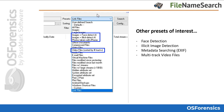OS Forensics version 8 introduced the new face detection and illicit image detection AI scans. The face detection scan will search the specified drive or location for all images that likely contain faces. The illicit image detection will scan a drive or directory for images that may contain nudity or other related types of explicit material. The 'Photos Taken with iPhone' scan will search the metadata of all image files, searching the EXIF data for Apple iPhone cameras.